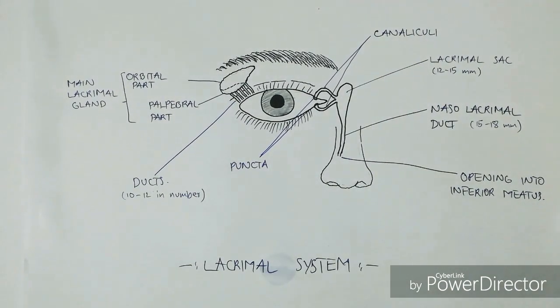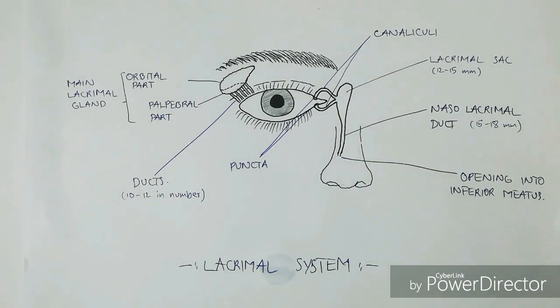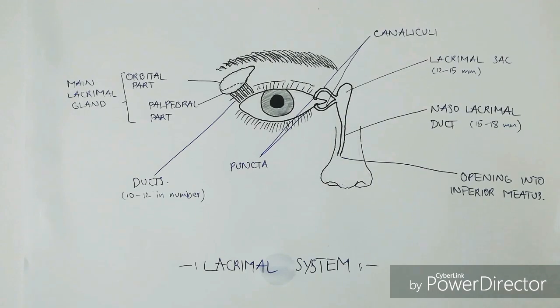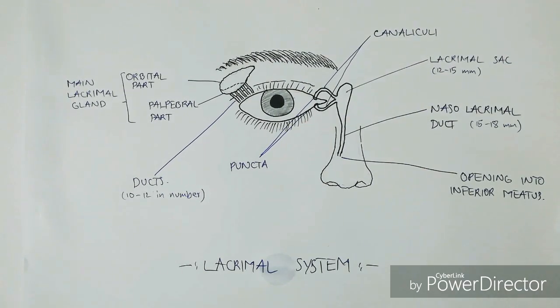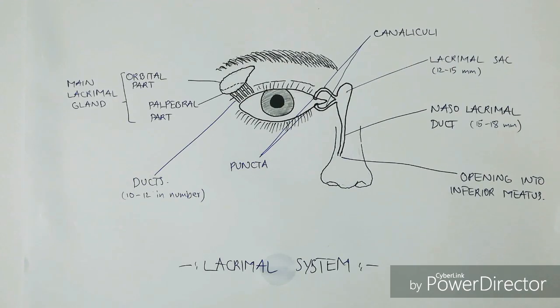The lymphatic drainage is towards the preauricular lymph nodes. Its nerve supply is the lacrimal nerve, which is a branch of the ophthalmic division of the trigeminal nerve. The lacrimal gland also receives sympathetic and parasympathetic nerve fibers.